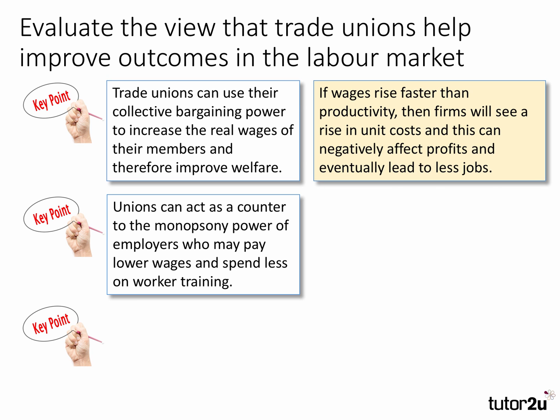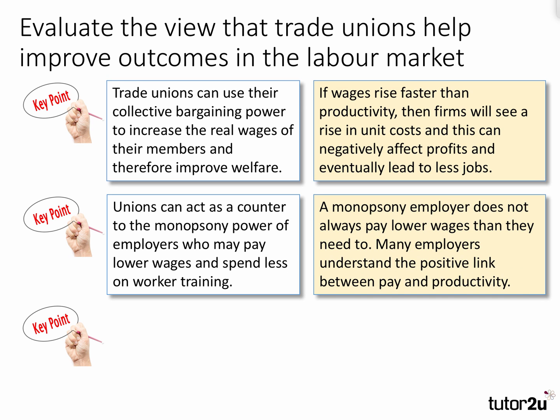Second argument: unions can act as a counter to the monopsony power of employers who may pay lower wages and spend less on worker training. It would be good to include an applied example like Sports Direct or Amazon, and also perhaps use a monopsony analysis diagram. For evaluation: a monopsony employer does not always pay lower wages than they need to — many employers understand a positive link between pay and productivity, the so-called efficiency wage theory.